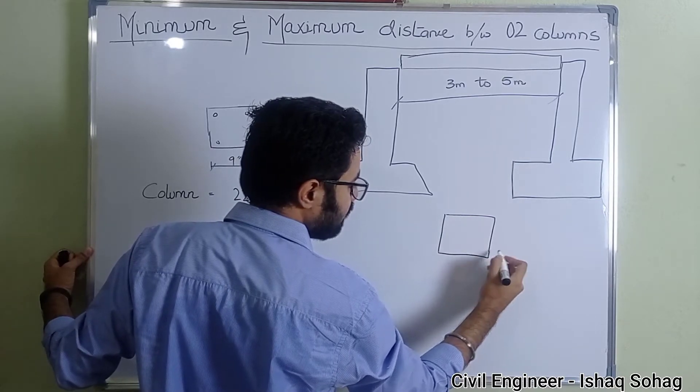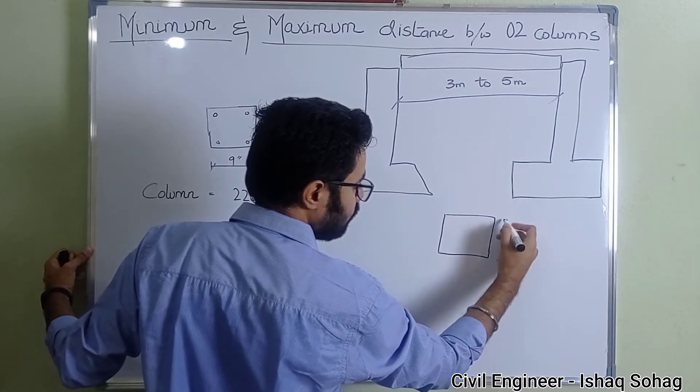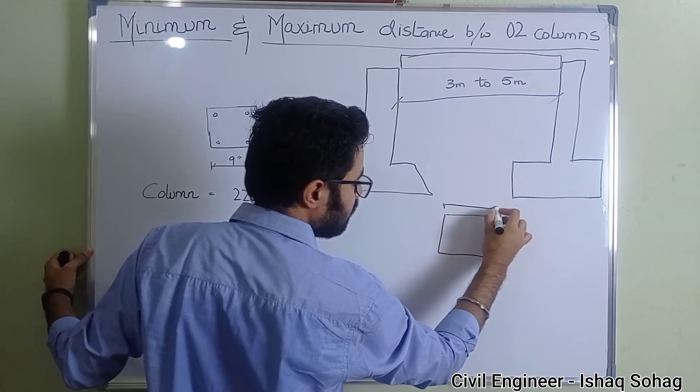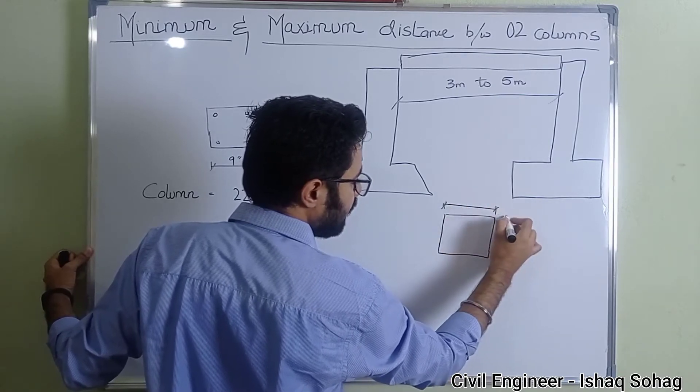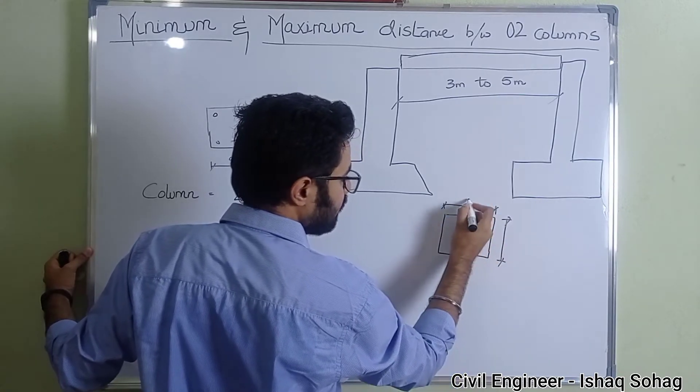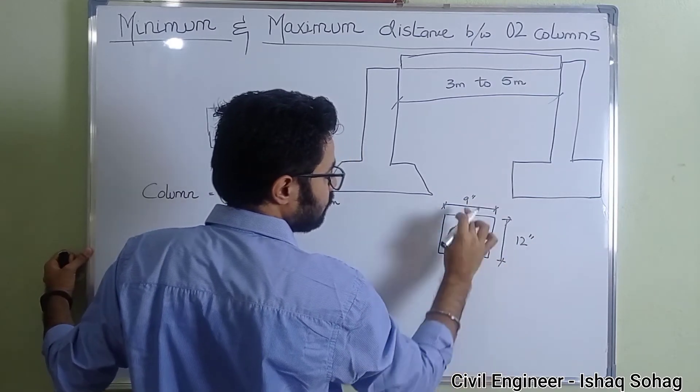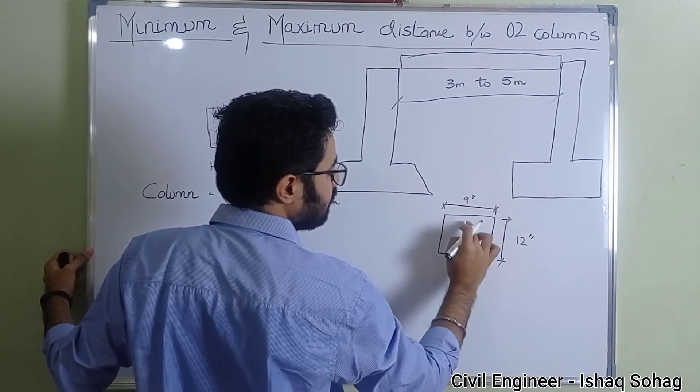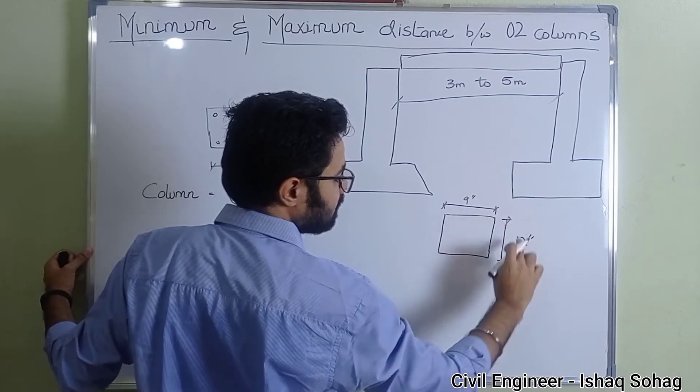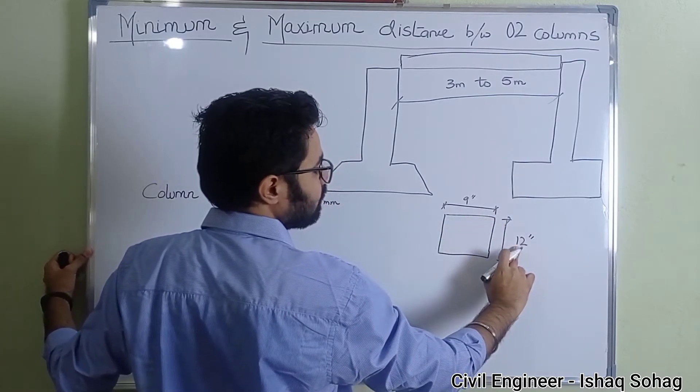The cross sectional value here is going to be 9 by 12, okay. 9 inch and 12 inch. So 9 is going to be the width and the thickness or the depth is going to be 12 inches.